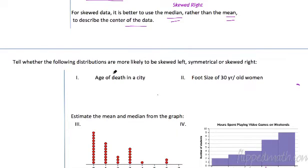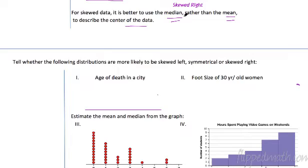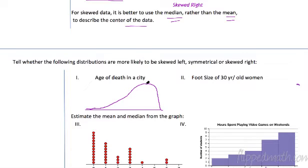Now think about what this distribution would look like: the age of death in a city. When people die, very few die young — and that's a good thing. Then people start dying more once they get older. So there's a whole clump of people that die up here — that's mainly old people — and very few die young, so it's spread out over on the lower end. I would say this is skewed to the left.